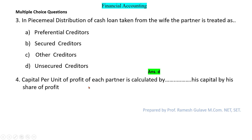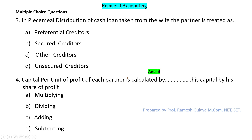The next question says: capital per unit of profit of each partner is calculated by blank. Capital per unit of profit is calculated by dividing his capital by his share of profit. So option B is the right answer.